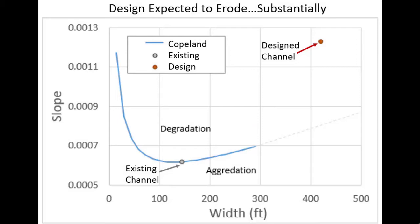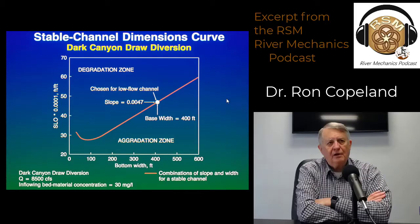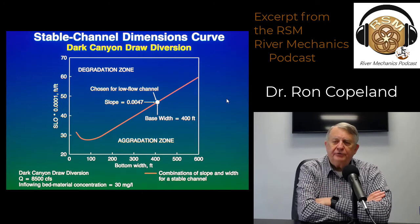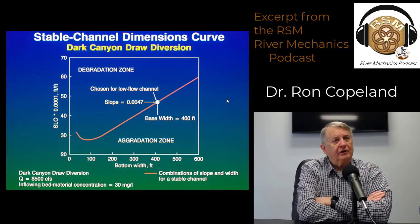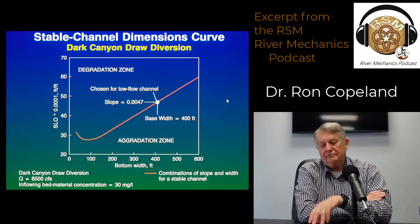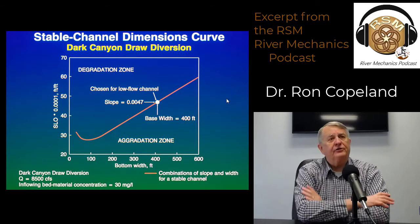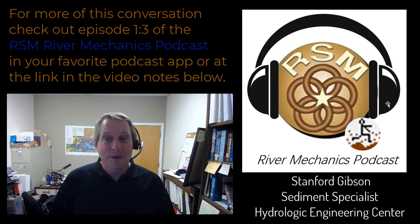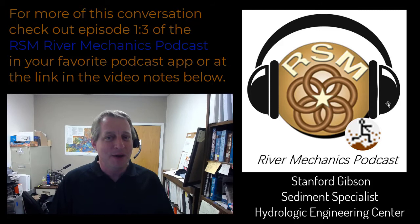I feel like every project should do this because it's not a big lift and it gives you an analytical solution space. I was involved in a project recently where they had defined a width, and when I ran this method there was no place where that width intersected with the curve — it was going to erode in all slope conditions. It took me a day. This kind of analysis should be standard. That's an excerpt from a podcast with Dr. Ron Copeland, spun out into a video short because the content worked better with visuals. For more conversations with river mechanics and sediment transport experts, check out the RSM River Mechanics podcast.